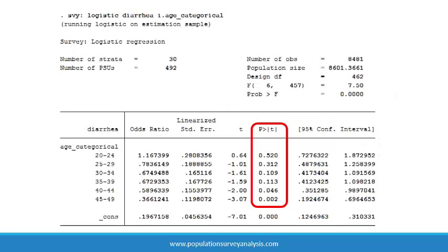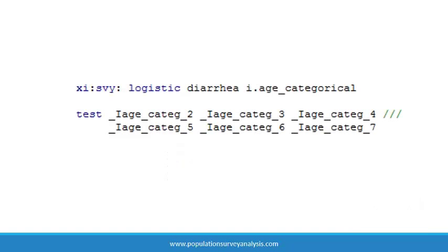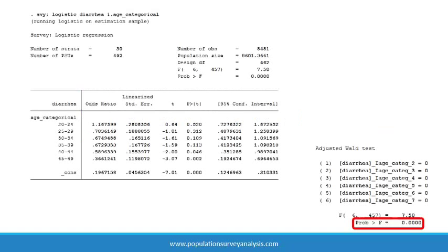Stata will display the p-values for a single set of comparisons to the reference category. However, we can generate an overall p-value that summarizes statistical significance of all comparisons across all categories in the variable. This global p-value tells us whether the categorical variable is contributing to the model, if any of its odds ratios are different. To generate the global p-value, run the model, then run a test statement by typing test and listing all of the dummy variables created for that variable. Note that the reference dummy variable is omitted. This is the global p-value for a multi-category variable.